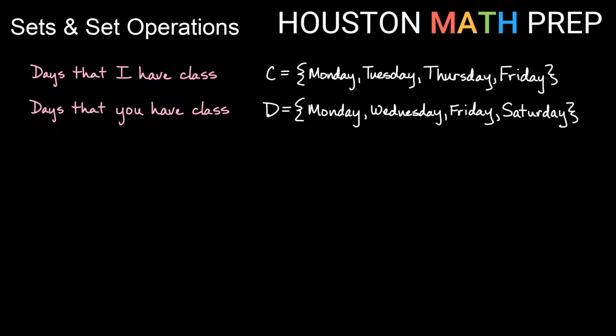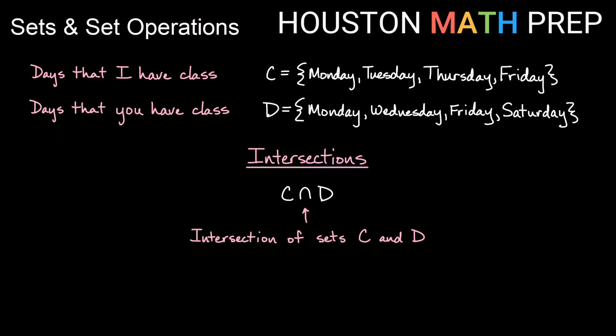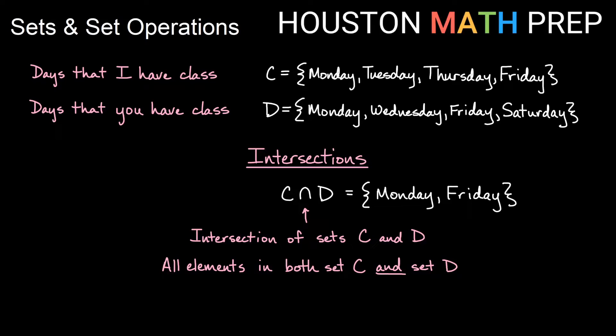Let's say we define two other sets. Let's say the days that I have class are set C, and I have class on Monday, Tuesday, Thursday, Friday each week. And let's say the days that you have class are set D, and those are Monday, Wednesday, Friday, Saturday. So we might talk about the days that we both have class, and that's called an intersection. We read this notation as C intersect D, and the intersection is simply all of the elements that are in both set C and set D. To be in the intersection you need to be in both sets. I notice that Monday is in both lists and Friday is in both lists. So the intersection of sets C and D is Monday and Friday.